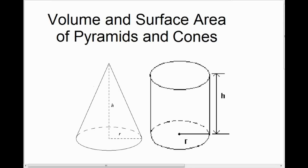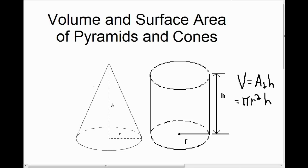The next thing we're going to talk about is how to calculate the volume and surface area of a cone. Before that, let's review the volume of a cylinder, which we've already covered. To calculate the volume of a cylinder, we do the area of the base times the height. On a cylinder, the base is a circle, so the area of the base is pi r squared, and then we multiply that by the height.